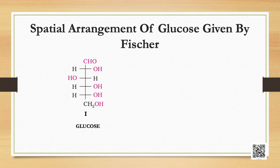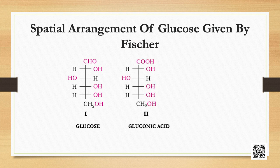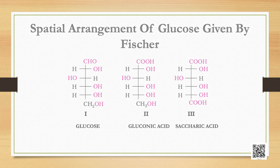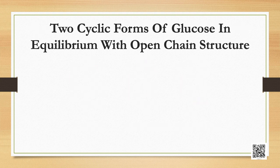Glucose is correctly named as D(+)-glucose. The 'D' before the name represents the configuration, whereas '+' represents the dextrorotatory nature of the molecule. The letters D or L before the name of any compound indicate the relative configuration of a particular stereoisomer with respect to the configuration of some other compound whose configuration is known. Structure one of glucose explained most of its properties.